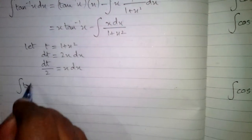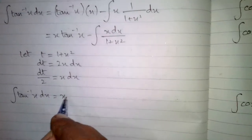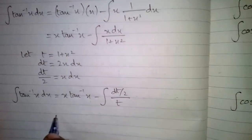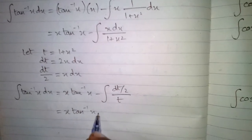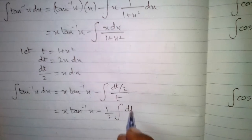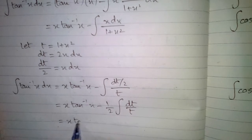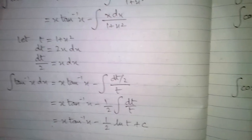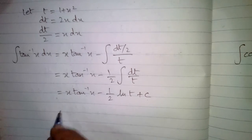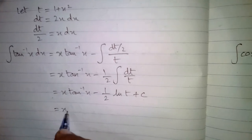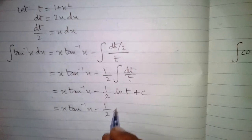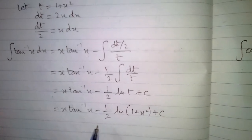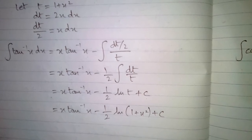So the integral of tan inverse x dx equals x times tan inverse x minus one half times the integral of dt upon t. The integral of dt upon t is ln t. Substituting back, we get x times tan inverse x minus half times ln of 1 plus x square plus c, where c is the constant of integration.